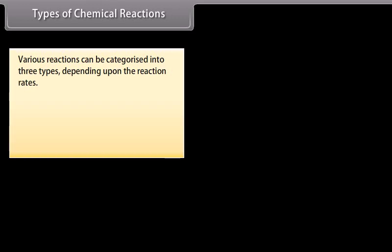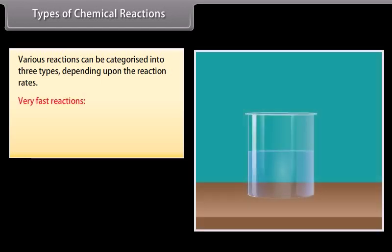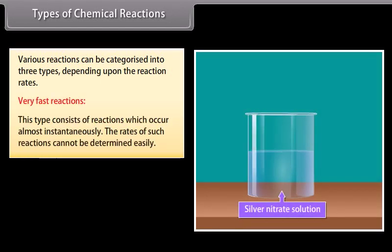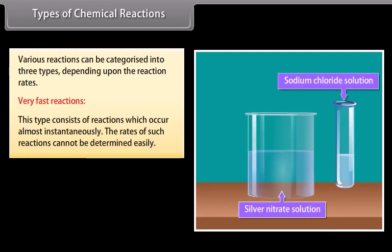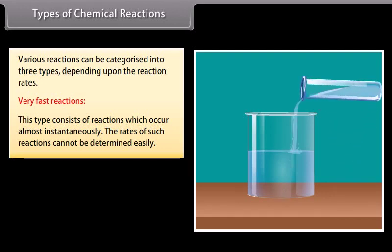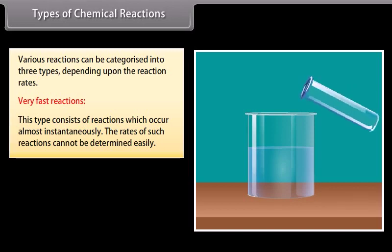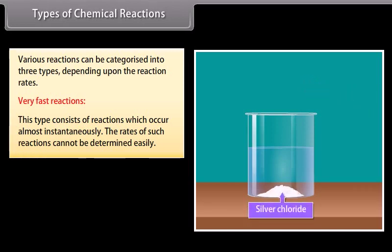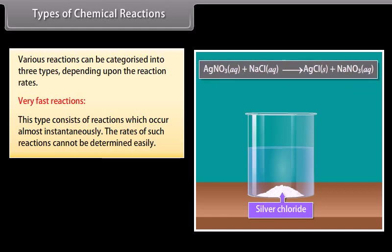Various reactions can be categorized into three types depending upon the reaction rates. Very fast reactions: this type consists of reactions which occur almost instantaneously; the rates of such reactions cannot be determined easily. For example, the precipitation of AgCl occurs instantaneously by addition of aqueous solution of sodium chloride to aqueous solution of silver nitrate.